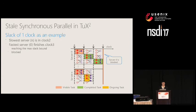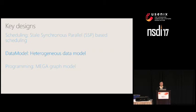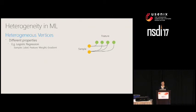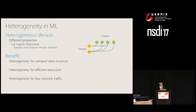Our second major extension enables TAPS2 to be aware of heterogeneities in machine learning using a heterogeneous data model. For example, logistic regression in the graph model has sample and feature vertices with different properties — sample vertices have a label field, while feature vertices have weight and gradient fields. In TAPS2's data model, users can define their own vertex types and specify vertices with different types. This heterogeneity awareness enables more compact data structures for better data locality, efficient execution, and reduced network traffic.